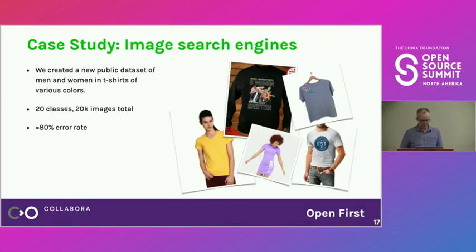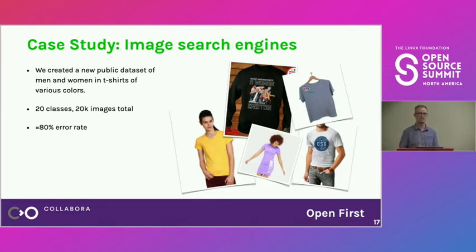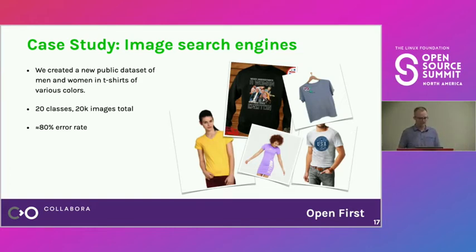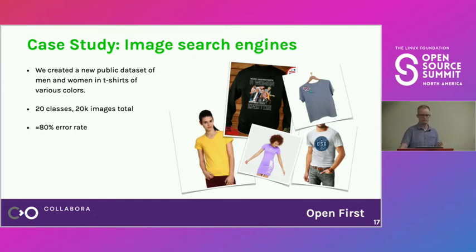We did another case study — a little bit funny. We created a dataset of men and women in t-shirts of various colors using Bing image search. We typed in things like "women in a black t-shirt," and got 20 classes, 10 colors, men and women, 20,000 images — and an 80% error rate.